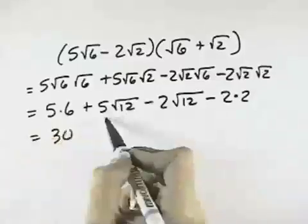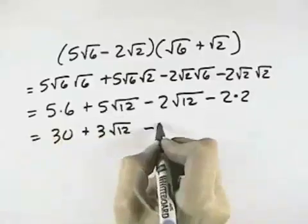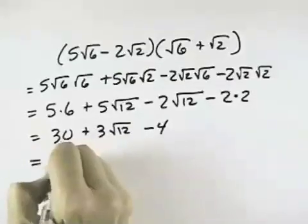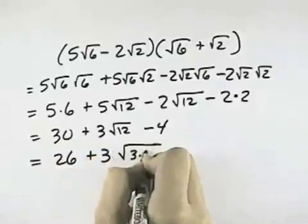So I have 30. 5 minus 2 is plus 3 times the square root of 12, minus 4. 30 minus 4 is 26, and then I have 3. The square root of 12 can be broken down into 3 times 4.